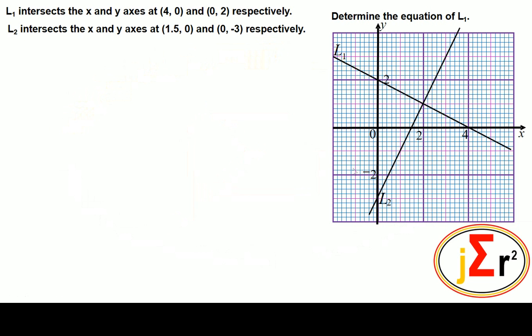L1 intersects the x and y axes at (4,0) and (0,2) respectively. L2 intersects the x and y axes at (1.5,0) and (0,-3) respectively.